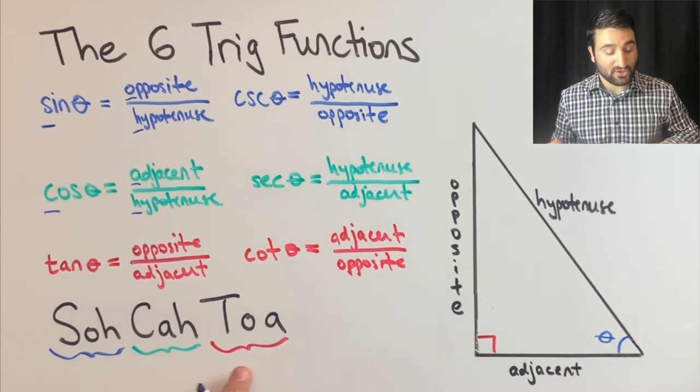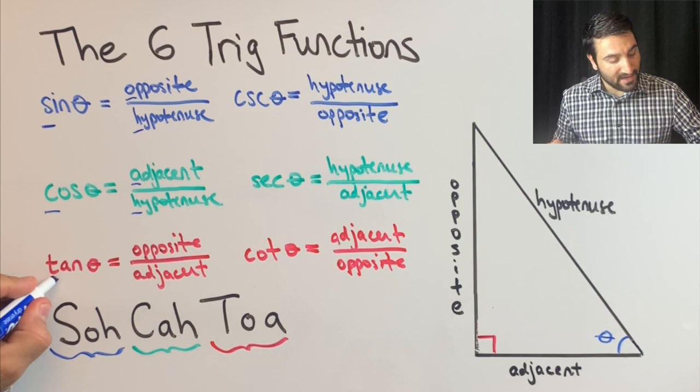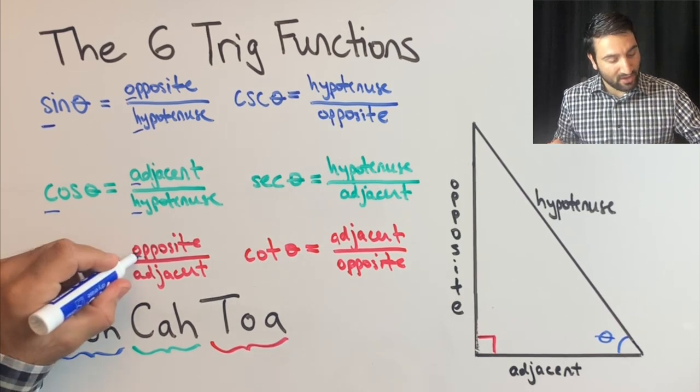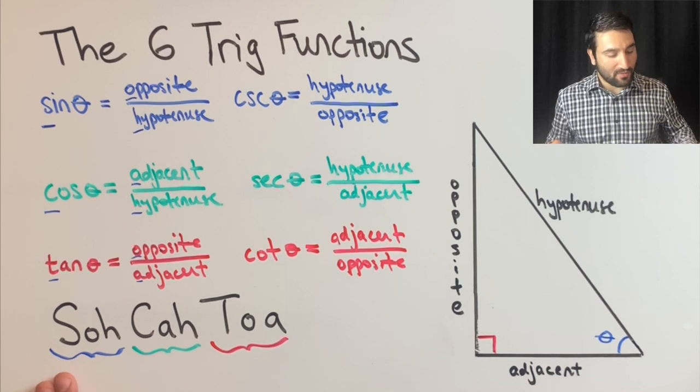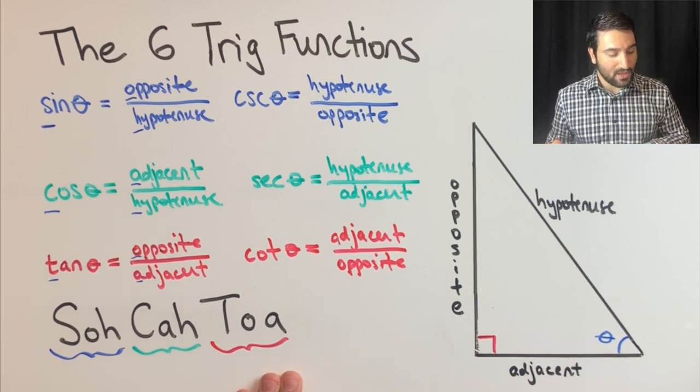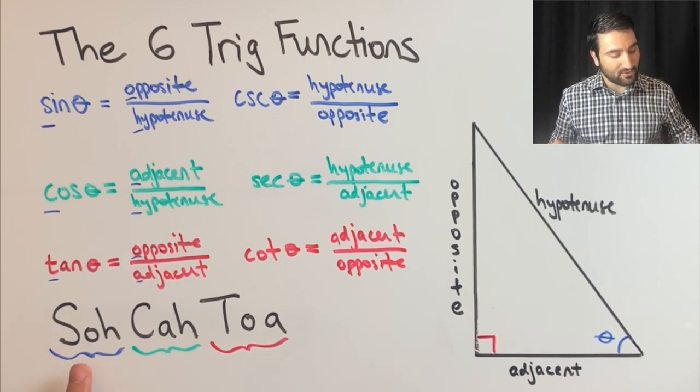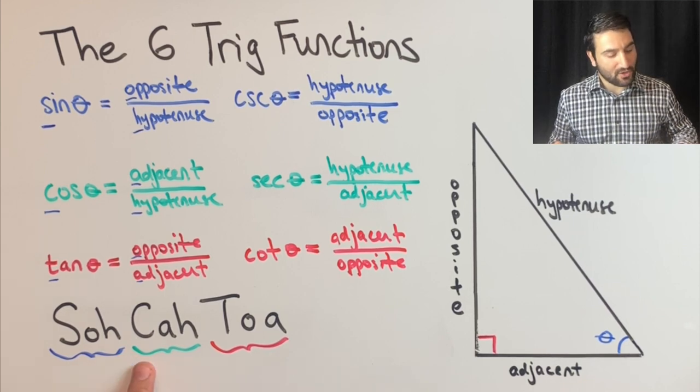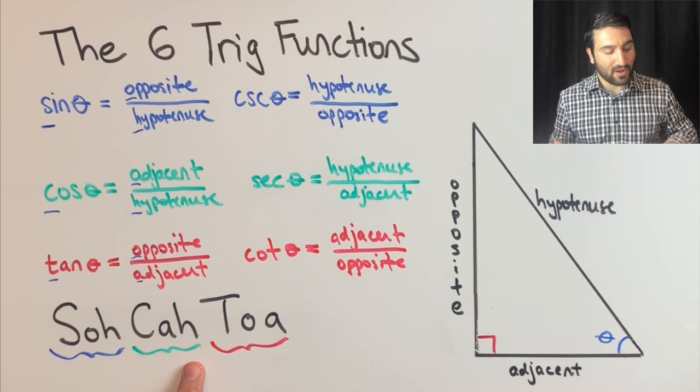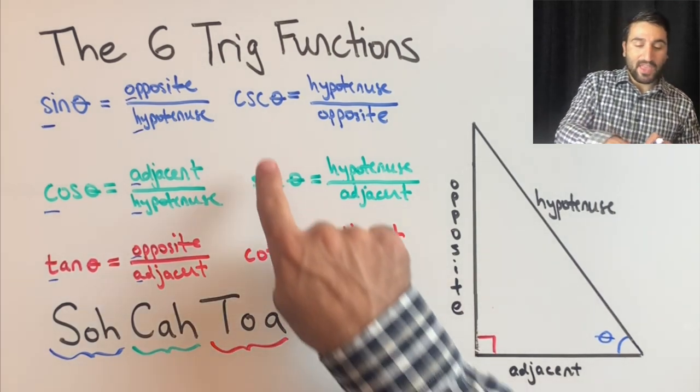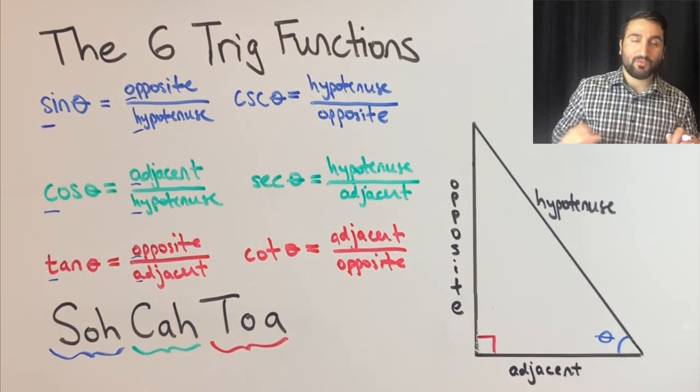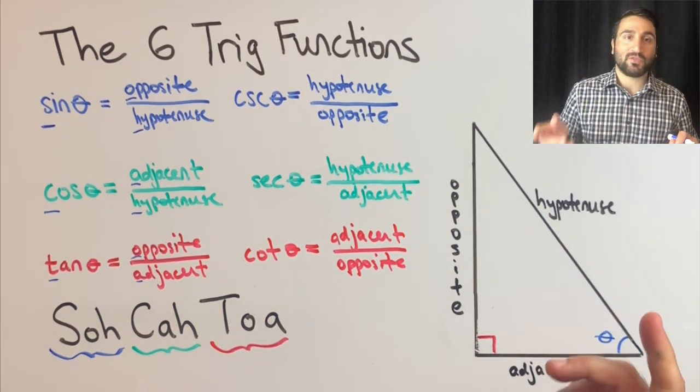And then you guessed it, TOA is going to be tangent is opposite over adjacent. So if you memorize SOH CAH TOA, then you'll know that sine of the angle equals opposite over hypotenuse, cosine of the angle is adjacent over hypotenuse, tangent of the angle is opposite over adjacent.